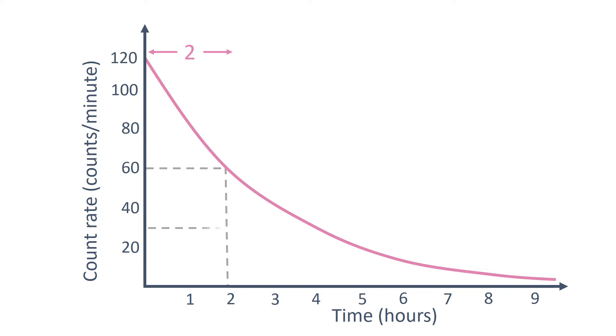You can see that if we work out the next half-life, it's still two hours, as to drop from 60 to 30 took an additional two hours.